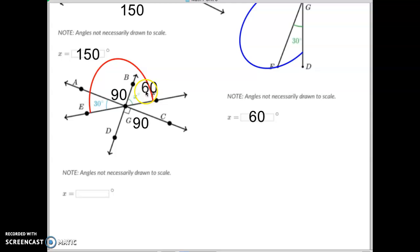180 minus 120 is 60 degrees. So this angle here is 60 degrees, which is what this one is.